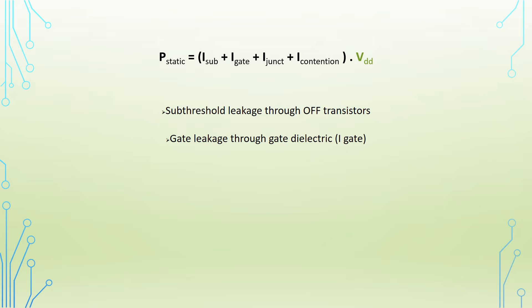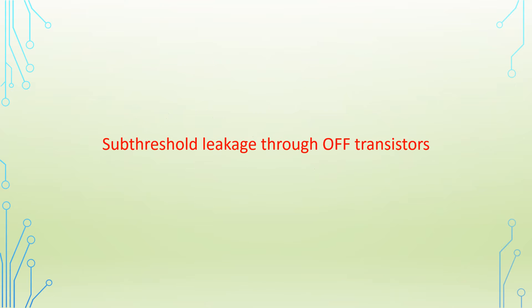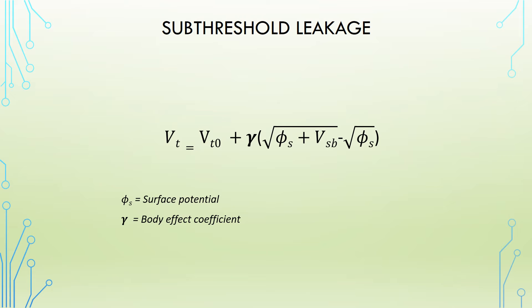As you can see in the equation, let's concentrate on the sub-threshold leakage as it is usually the dominant source of static power. We know that threshold voltage depends on substrate voltage, as it is obviously shown in the equation here. Knowing that the surface potential and the body effect coefficient are usually fixed for each transistor, the only thing here we can vary is the substrate voltage.